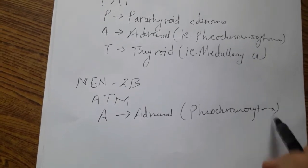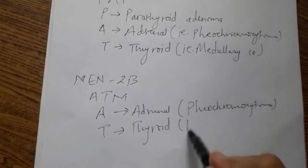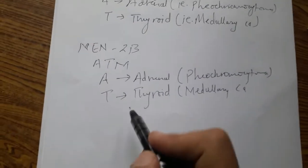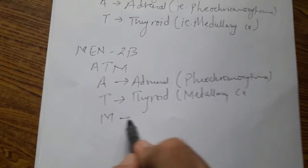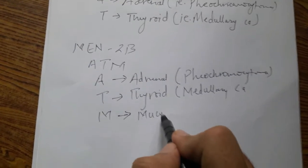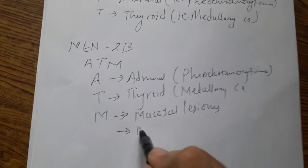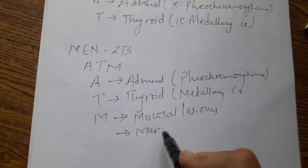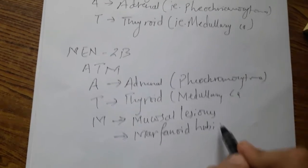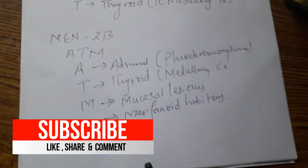You can use the mnemonic ATM. A is for adrenal, that is pheochromocytoma. T is for thyroid, that is medullary CA. And M is for two characteristics: first one is mucosal lesions, and second one is for Marfanoid habitus.